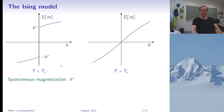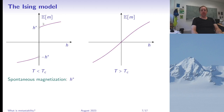Here are representations of the spontaneous magnetization. We plot the expected magnetization as a function of the magnetic field for both low and high temperatures. For temperatures below the critical temperature, as H goes to zero from above the magnetization converges to H*, a positive spontaneous magnetization, while from below it converges to −H*. Above the critical temperature, the magnetization varies continuously with the magnetic field.